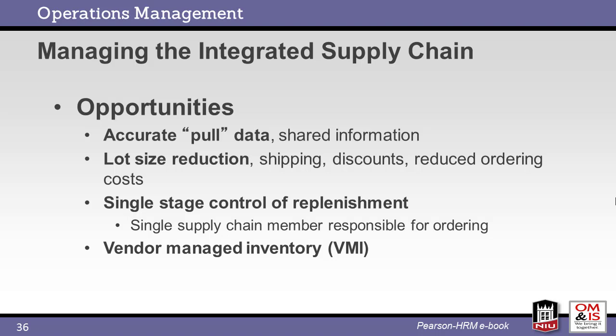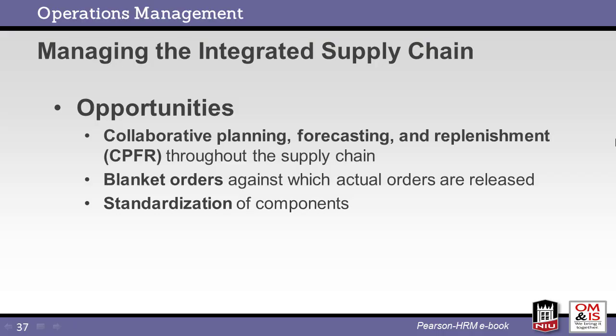Vendor-managed inventory is a common method where the vendor manages the inventory within their customer. For example, Walmart provides inventory data to key suppliers, and it is up to the supplier to manage the inventory on Walmart shelves to agreed levels. Other methods to enhance the supply chain include collaborative planning, where representatives of multiple companies within the supply chain work together on a common plan, forecast, and replenishment process. This may include blanket orders where the initial setup of the agreement is completed, with fulfillment orders released over time per the guidelines of the master blanket order.